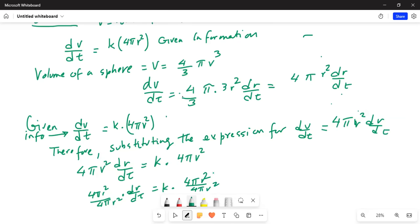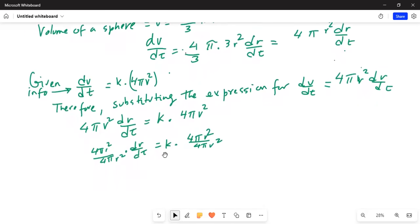So, this becomes 4πr² divided by 4πr² times dr/dt is equal to k times 4πr² divided by 4πr². Or, if I create some more space. Then 4πr² cancels from the numerator and denominator on the left hand side and on the right hand side. So, finally, we are left with dr/dt is equal to k, which is the constant.